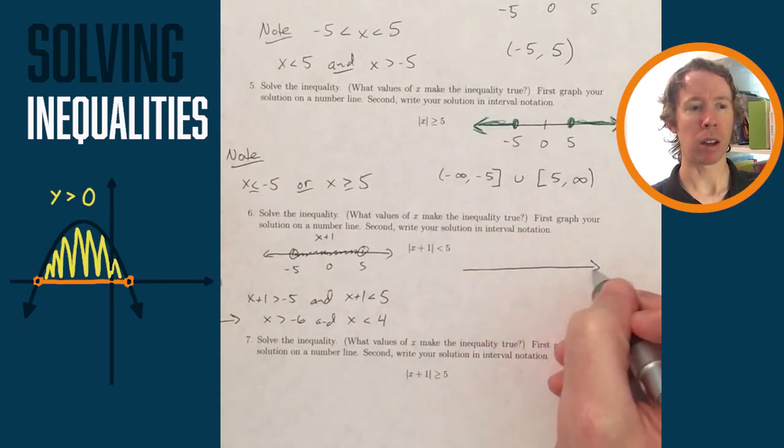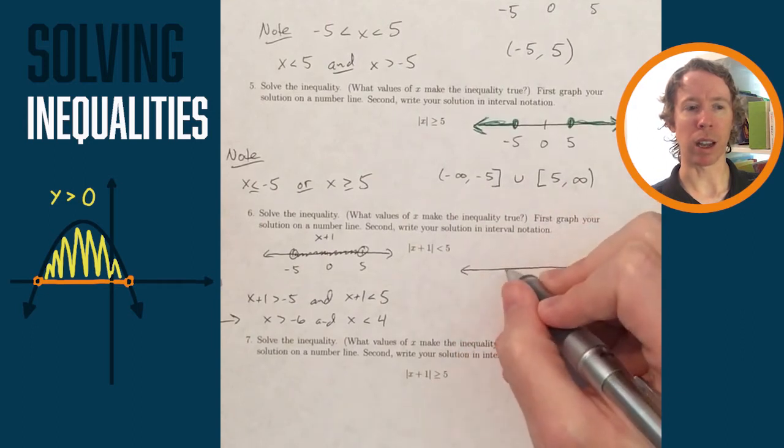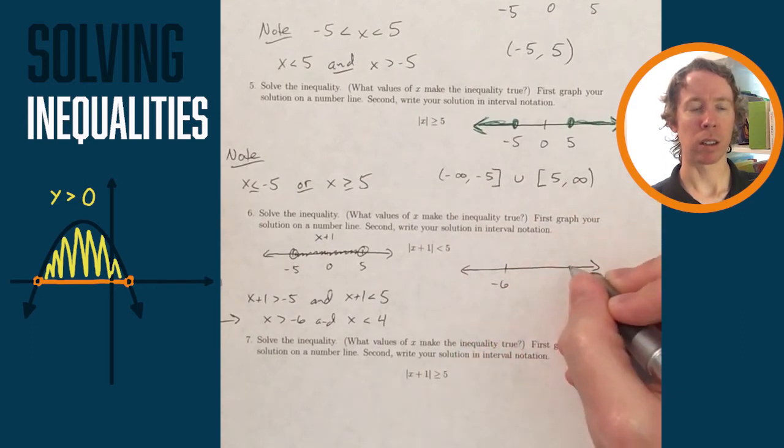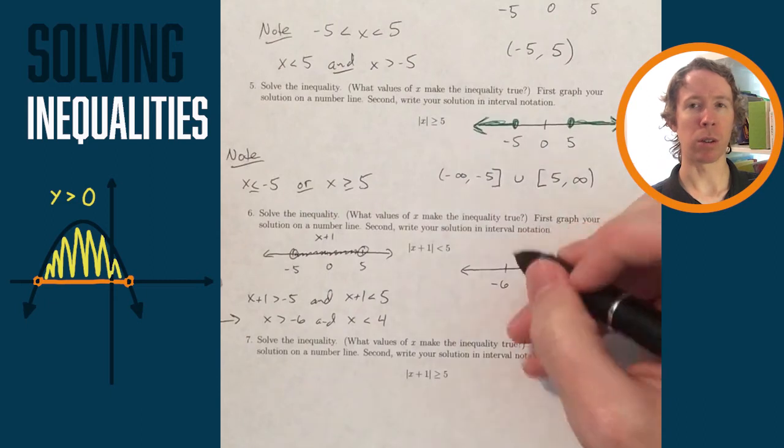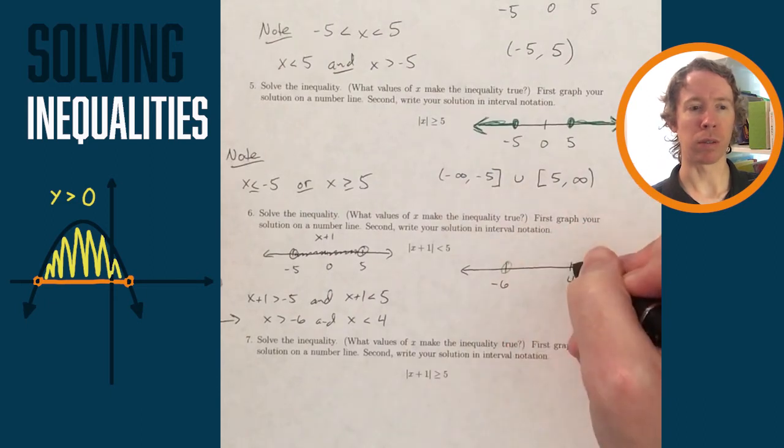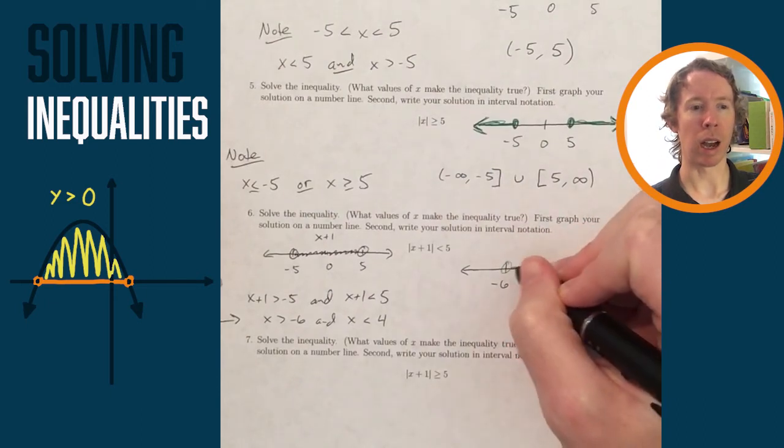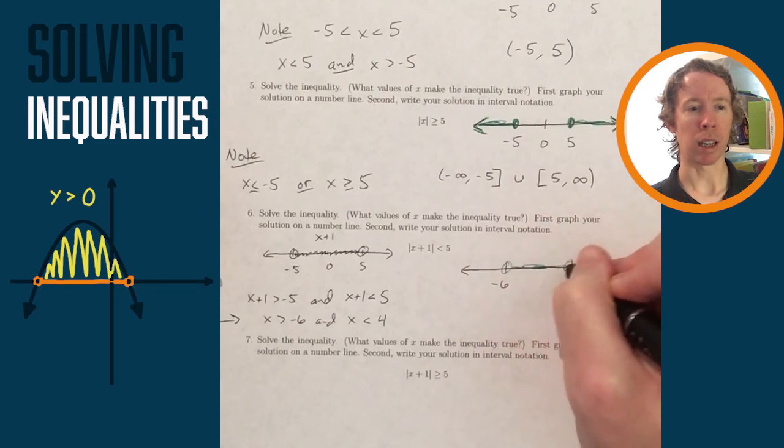So to draw that on a number line, greater than negative 6, I start at negative 6 and go to the right. And x is less than 4, so it can only go up to 4. Neither of those is included, so I put an open circle around those, fill in the line in between the line segment.